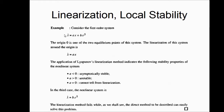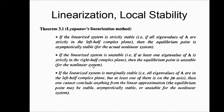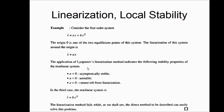As an example, consider this first-order system. The origin is one of the two equilibrium points. Upon equating the right-hand side to zero, x equal to zero is one solution, and there is a second solution as well. The linearization of this non-linear system about the origin is x-dot equal to ax. Upon applying Lyapunov's linearization theorem to this equation, we arrive at the following stability conclusions for the non-linear system.